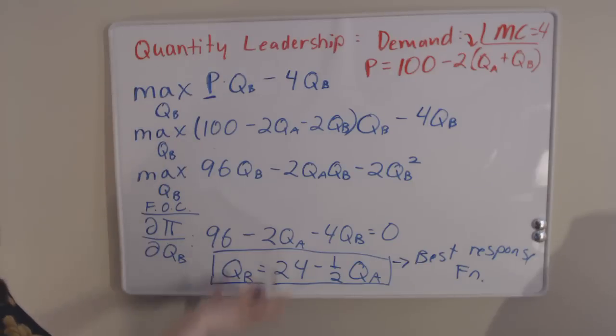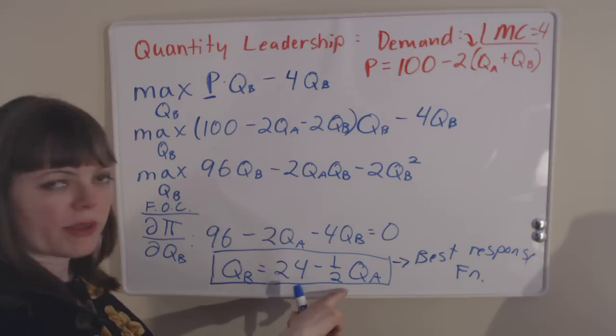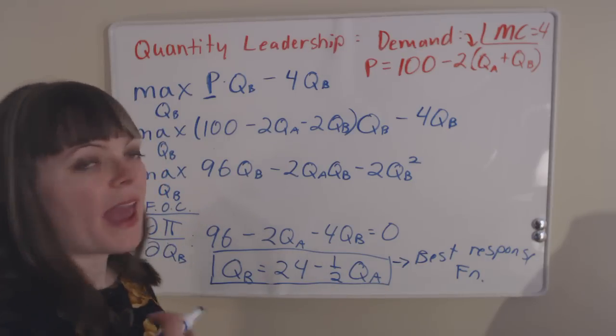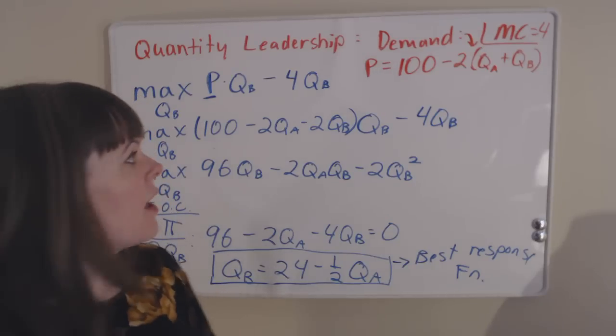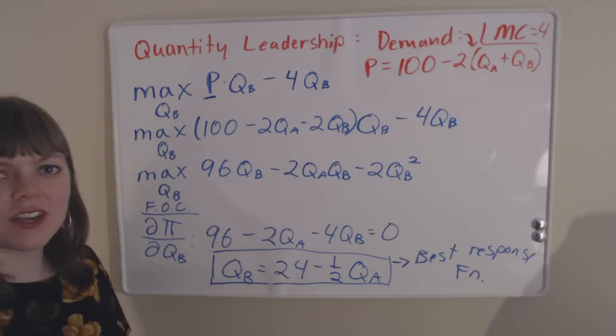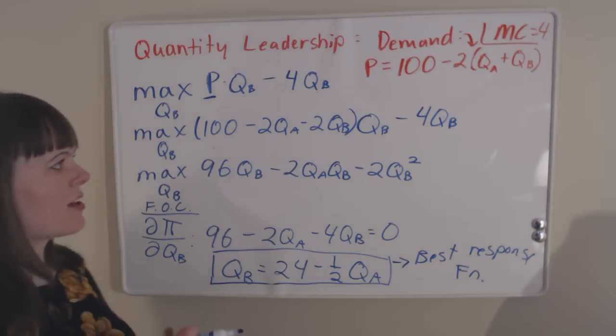We've done our first half of our oligopoly problem. We know how firm B will respond to firm A. Our next step is to work our way backwards and to look at firm A's maximization problem. We're going to set up firm A's maximization problem, and it's actually going to look exactly the same as firm B's maximization problem because this is a symmetric problem.